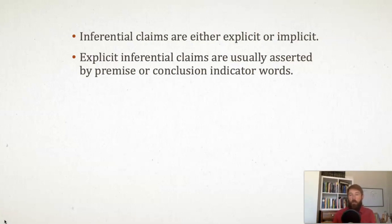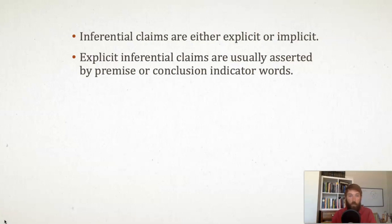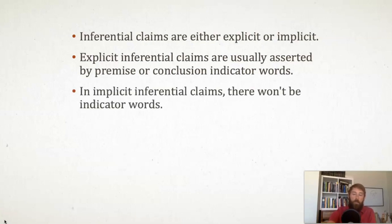If you see indicator words in an argument, things like 'therefore' and 'for the reason that,' those indicator words make the inferential claim explicit. Think about explicit as something that's out there in your face. Back in the day when people bought CDs they had stickers that said 'explicit lyrics' — those explicit lyrics were there to be heard. The edited version had the offensive language bleeped out, so it wasn't explicit. When you see those indicator words, that makes the inferential claim explicit so you know what someone is doing. Sometimes though there won't be any indicator words but there will be an argument — someone provides evidence supporting a conclusion without using any indicator words at all. In that case the inferential claim is implicit, meaning hidden, or you've got to read between the lines.